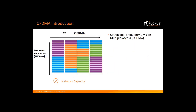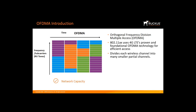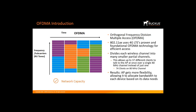Perhaps the biggest change is OFDMA — Orthogonal Frequency Division Multiple Access. 802.11ax uses 4G LTE's proven OFDMA technology for efficient access, allowing multiple users with varying bandwidth needs to be served simultaneously. It chops each wireless channel into many smaller partial channels, allowing up to 37 different clients to talk to the AP at once over a single 40 MHz channel, and up to 74 clients over an 80 MHz channel. The AP can allocate bandwidth to each device based on its stated needs.